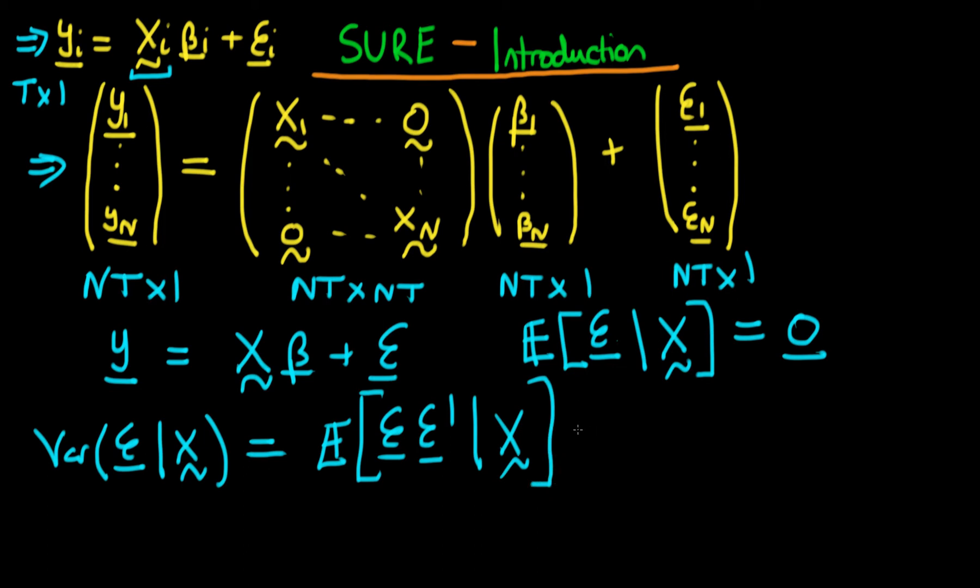Okay, and we can write this out in slightly longer form if we actually use the definitions of the given parameter vectors. This is just equal to the expectation of the error vector which is just e_1 through e_N times that parameter vector transposed.